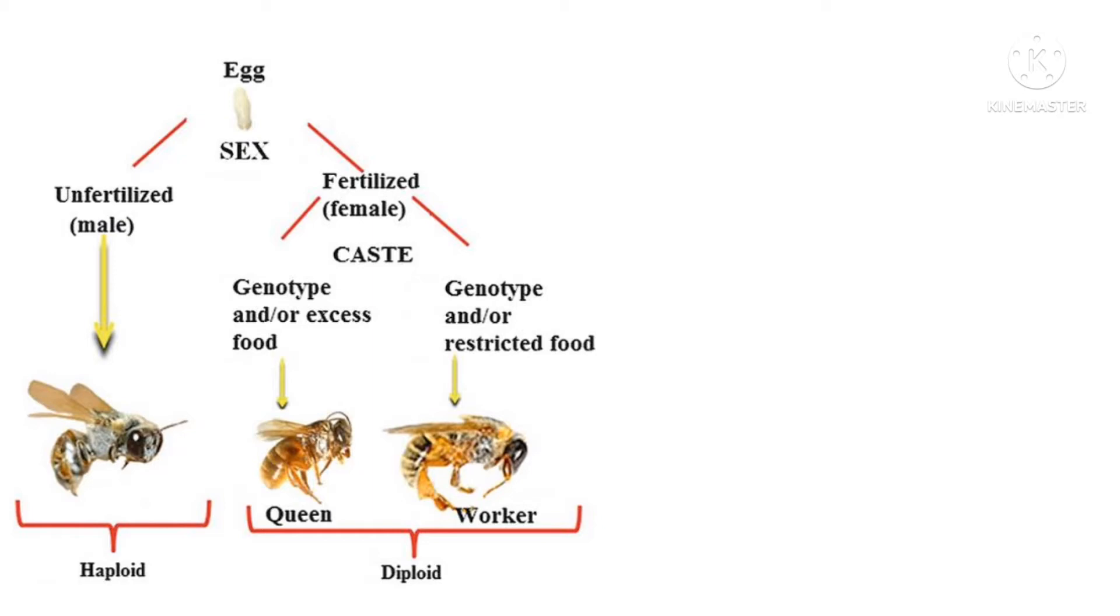According to this development, if fed with royal jelly, it will develop into the fertile female. If it is fed with normal jelly or normal honey, then it will develop as the worker.